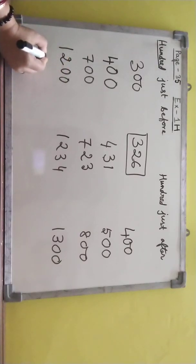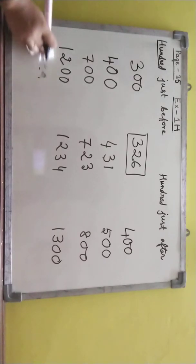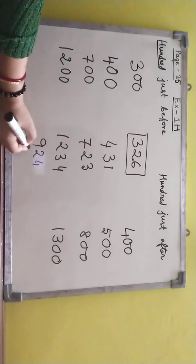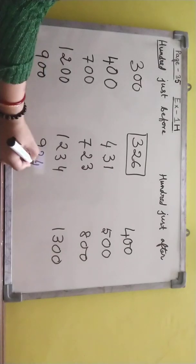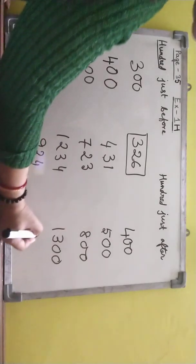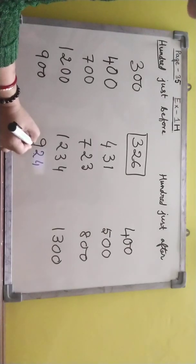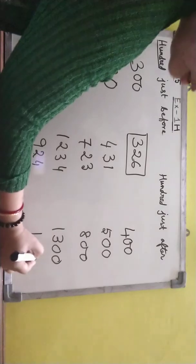Suppose one more example: 924. So 924, ones tens hundreds, so 900. Again ones tens hundreds, nine will be, I am adding one with nine, so it will become 1000, and rest two zeros. Got it.